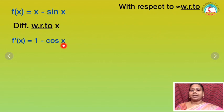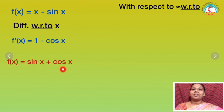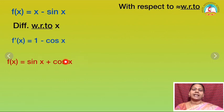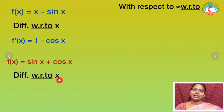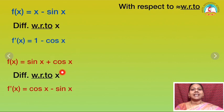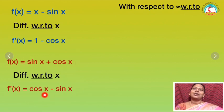For example, the next problem: f of x is equal to sin x plus cos x. I have to differentiate with respect to the right side variable, which is x. Differentiating with respect to x: differentiation of sin x is cos x, and differentiation of cos x is minus sin x. Therefore f dash of x is nothing but cos x minus sin x.